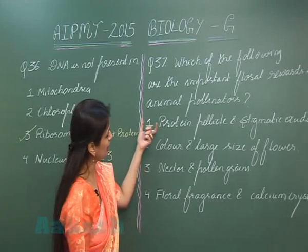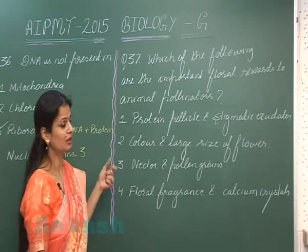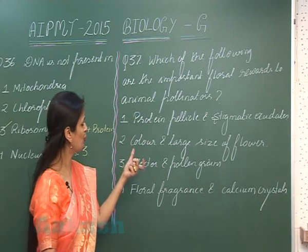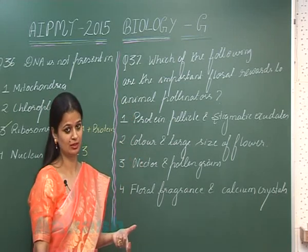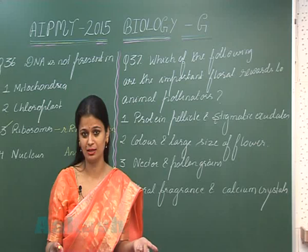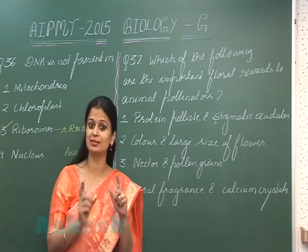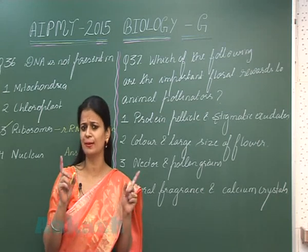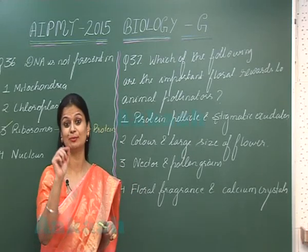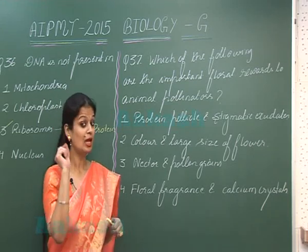Question number 37: Which of the following are the important floral rewards to animal pollinators? Animal pollinators get attracted towards flowers because they receive rewards. One such reward is nectar. The maximum amount of nectar is produced by plants pollinated by bats — bat-pollinated plants produce the maximum nectar.